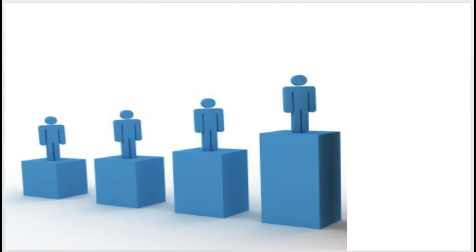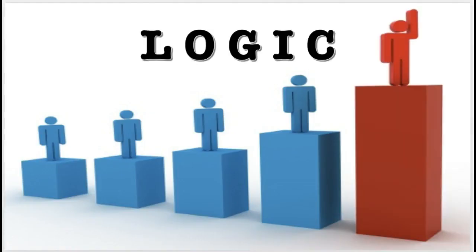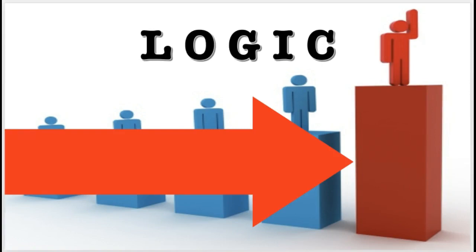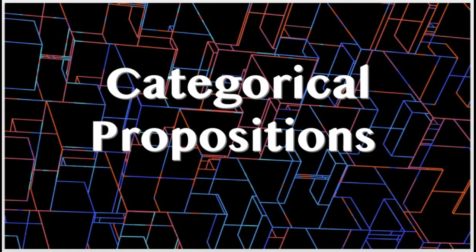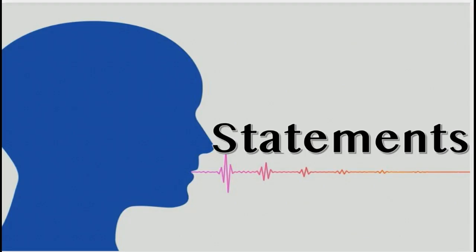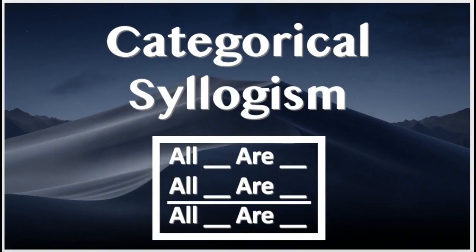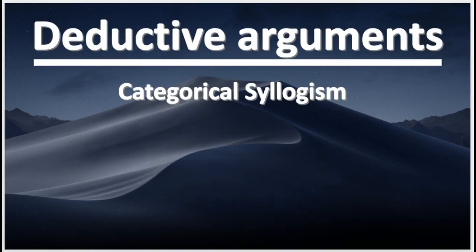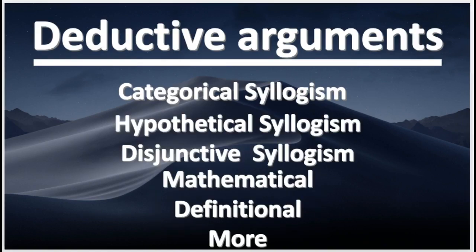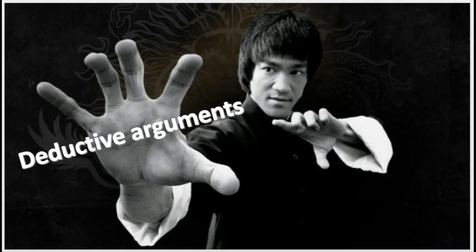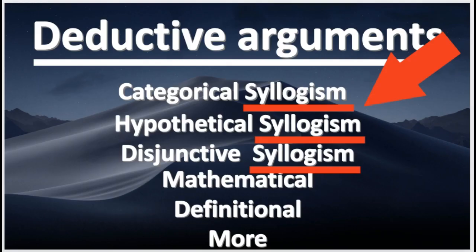Ladies and gentlemen, welcome to the next level of logic. In this level, you will learn to master categorical propositions. Categorical propositions are the statements of a categorical syllogism. A categorical syllogism is a particular deductive argument. There are only a limited amount of formal deductive arguments. You will learn to identify and master these deductive arguments. These formal deductive arguments are known as syllogisms.